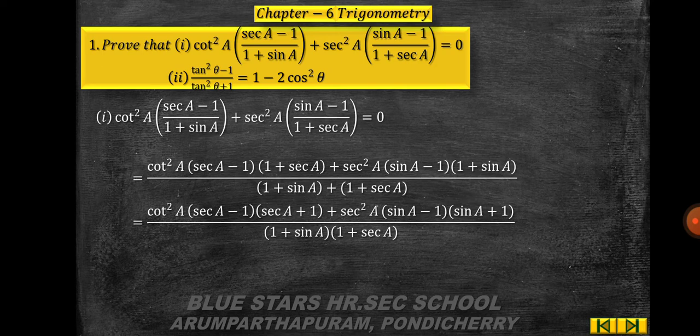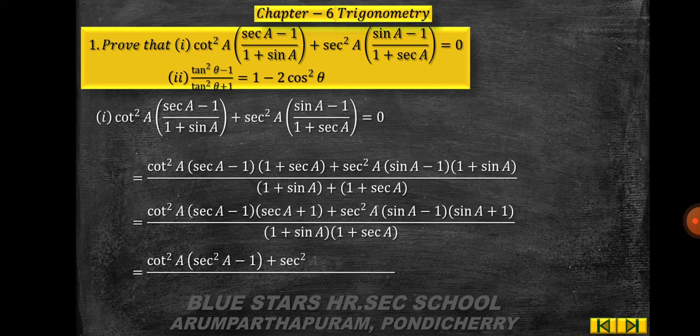Eliminating the previous denominator, we get cot²a · (sec a − 1). Since it is in the form (a − b)(a + b), that is (sec a − 1)(sec a + 1), we write it as a² − b² format. So: cot²a · (sec²a − 1) + sec²a · (sin²a − 1), divided by (1 + sin a)(1 + sec a).